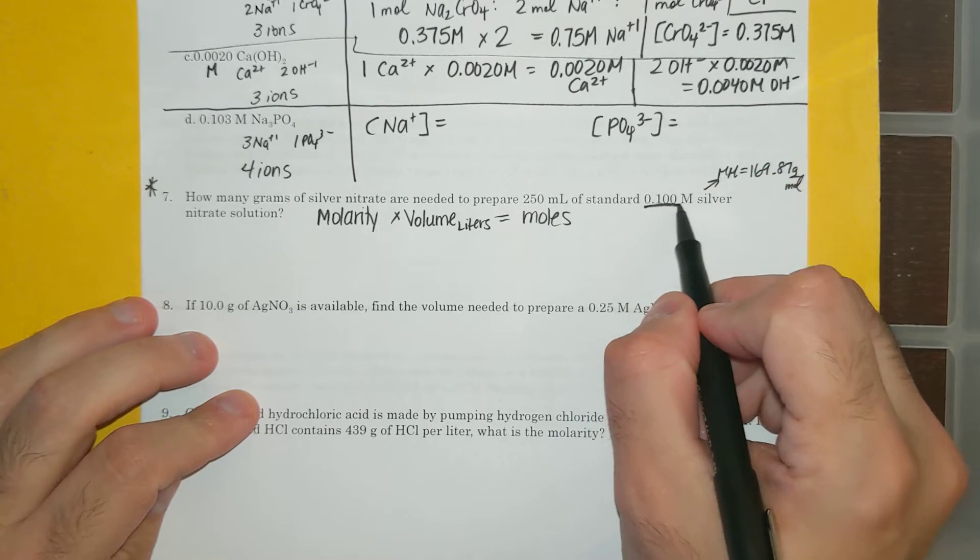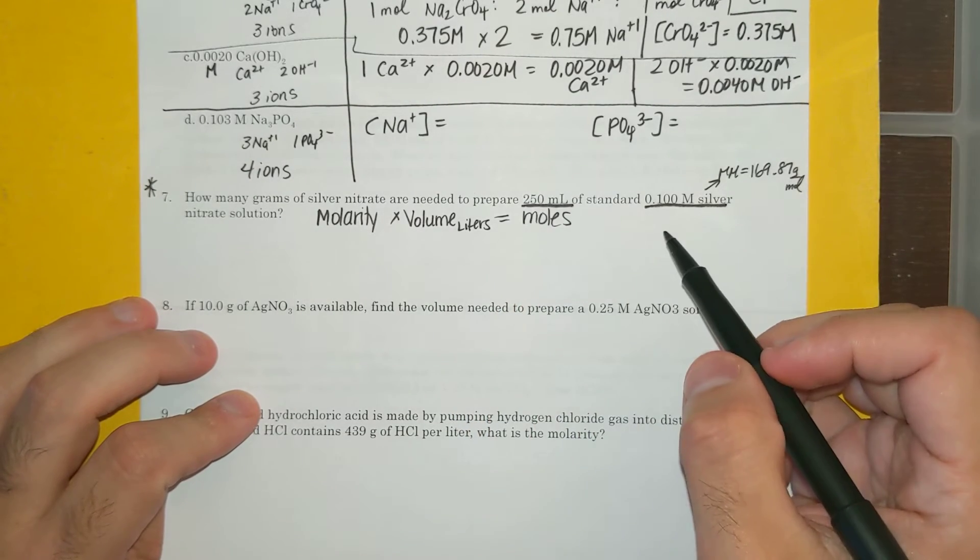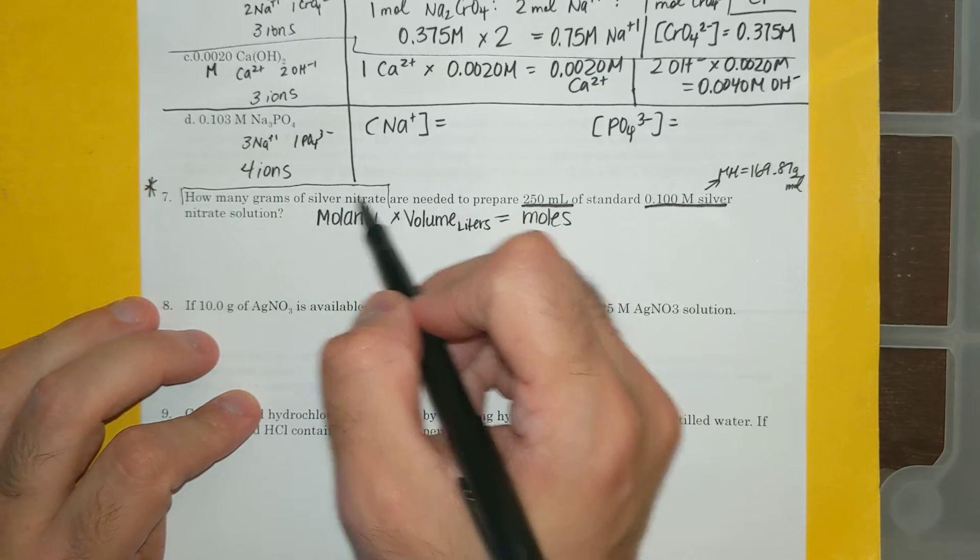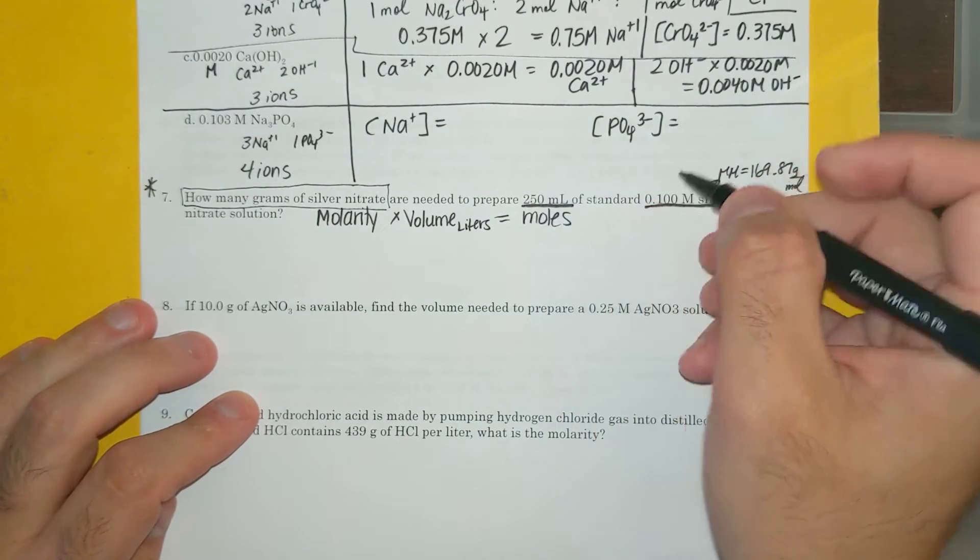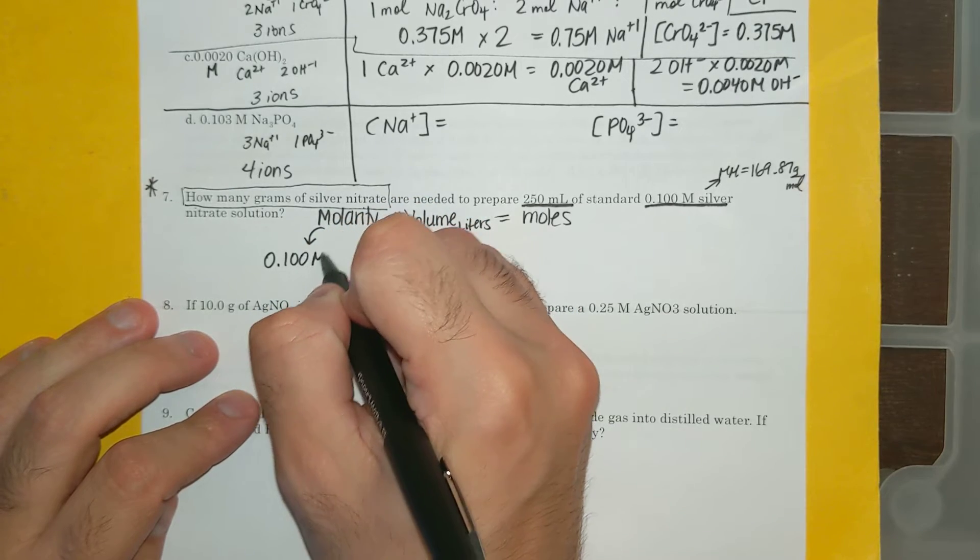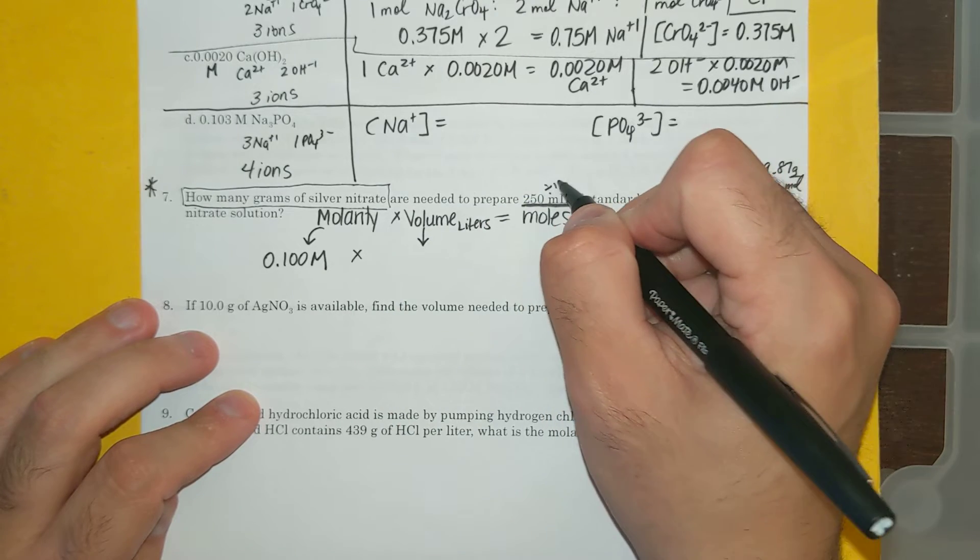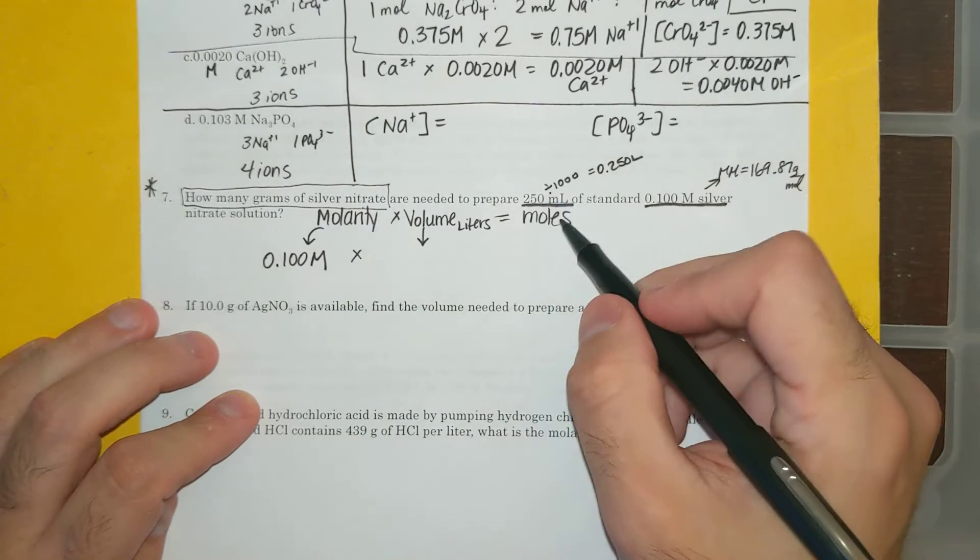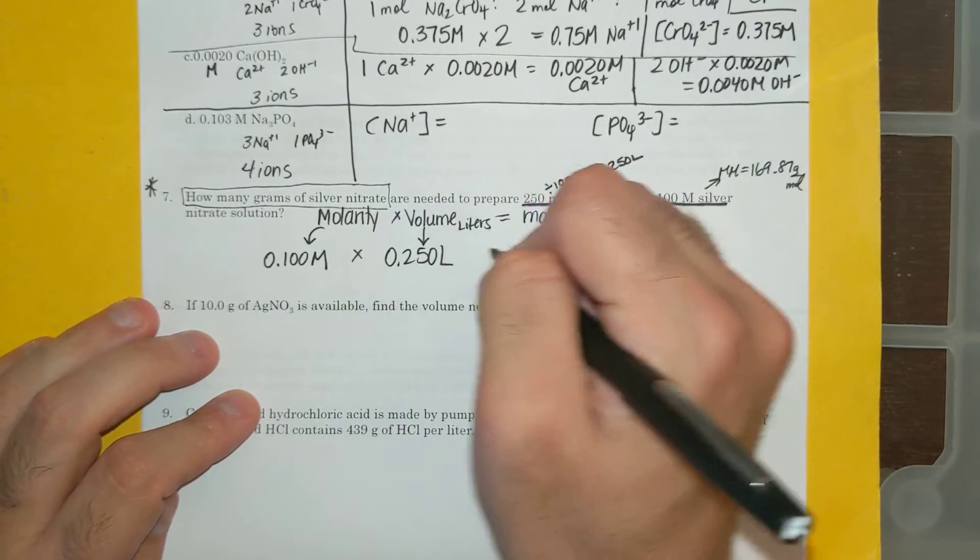So I have molarity and I have a volume here. If I multiply those two, that's going to give me moles, and then the question asks about grams. I'm going to set this up. Molarity is 0.1 molar. My volume, I need to convert to liters. If I divide by 1000, I get 0.250 liters. Remember, to go from milliliters to liters, divide by 1000.